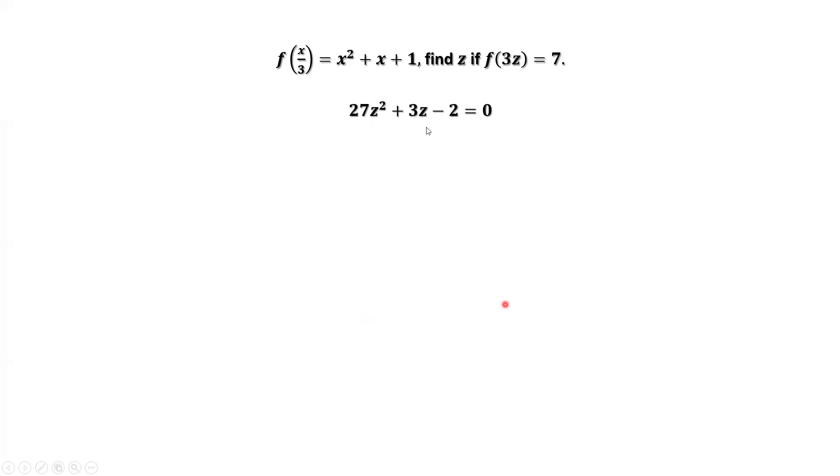How to solve this quadratic equation? The quadratic formula is always working if the solutions exist. The quickest way is to factor the left-hand side. By factoring the left-hand side, we have 9z minus 2 times 3z plus 1 equals 0.